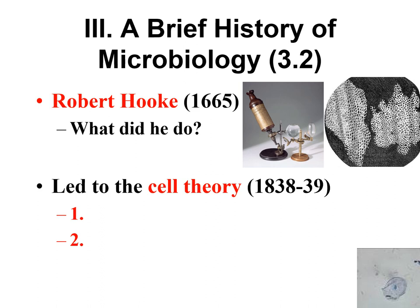Just know the scientists whose names are in red and also know what they did. Our first scientist is Robert Hooke. He was an English scientist working in the 1600s, and what he did was he saw the very first cells. Unfortunately, they were dead cells. This is the microscope you can see that he used.